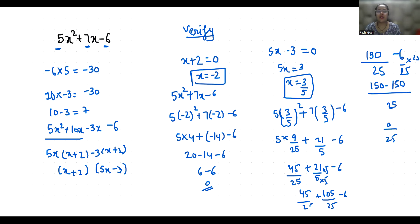So x plus 2 and 5x minus 3, both are factors of 5x² plus 7x minus 6.